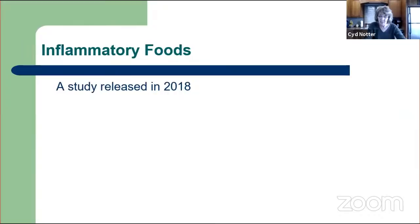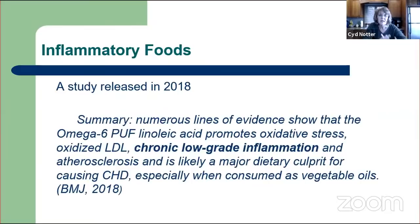A 2018 study from a heart institute in Kansas City looked at vegetable oil as a driver of heart disease. In summary, numerous lines of evidence show that the omega-6 polyunsaturated fat linoleic acid promotes oxidative stress, oxidized LDL, chronic low-grade inflammation, and atherosclerosis, and is likely a major dietary culprit for causing coronary heart disease, especially when consumed as vegetable oils. The researchers also stated that omega-6 fatty acid intake can be even more damaging to our endothelial cells than saturated fat. That's why we want to get all added oils totally out of our diets.